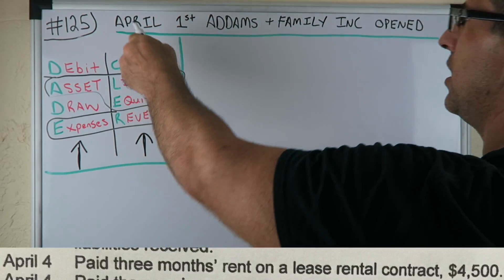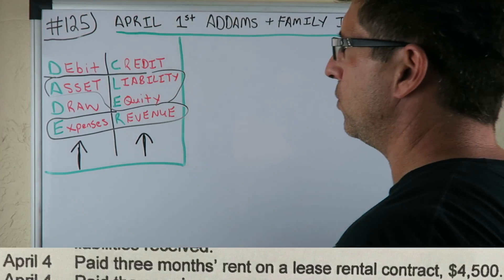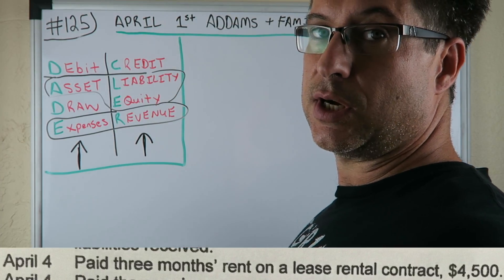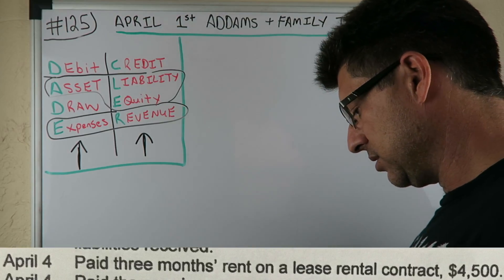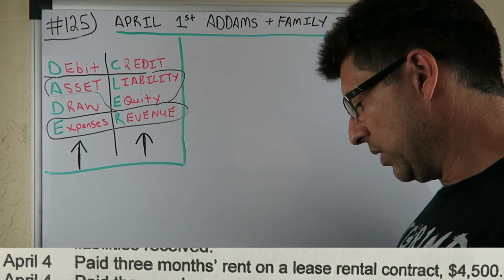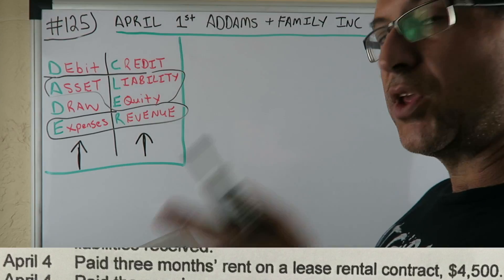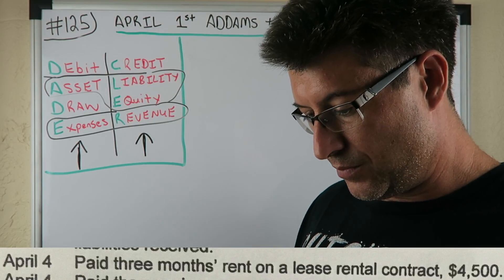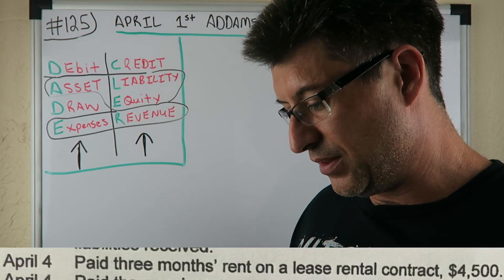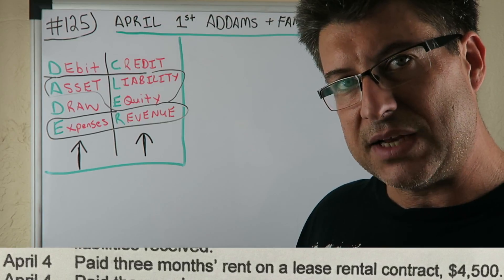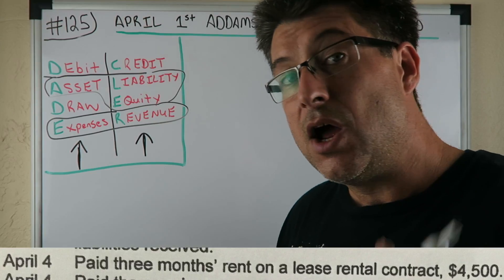This is our Adams Family Inc. On April 1st, Adams Family Inc. opened, and we're doing journal entries for it. This is the second one: paid three months rent on a lease rental contract. We leased a rental for three months and we're paying $4,500 right now. The business started April 1st, and this transaction is April 4th, so we haven't used any of the rent yet — we're prepaying it.